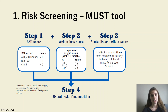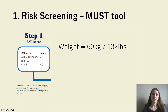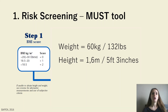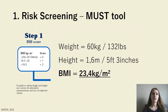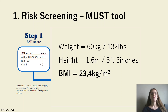We're going to start with step one. When she hopped on the scale, her weight was 60 kilograms or 132 pounds. When we measured her height, it was 1.6 meters or five foot three. So that gave us a BMI of 23.4 kilograms per meter squared. According to the BMI classification, that classifies her as normal. But remember, it's not always just the weight that we need to look at, so that is why we're going to move on to step two.